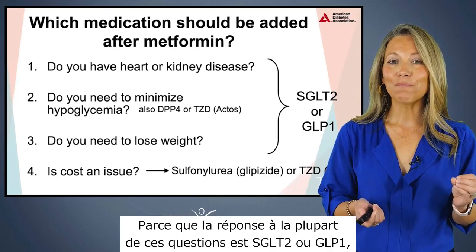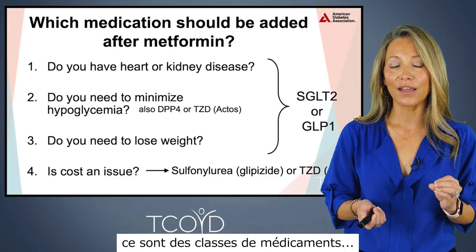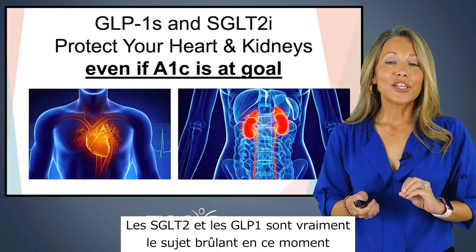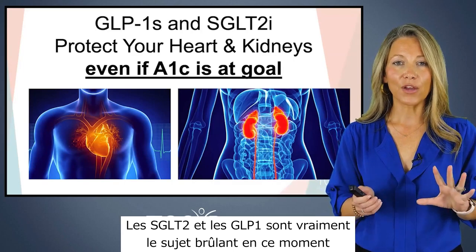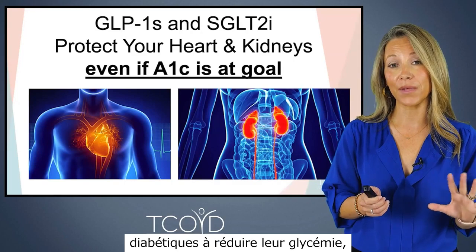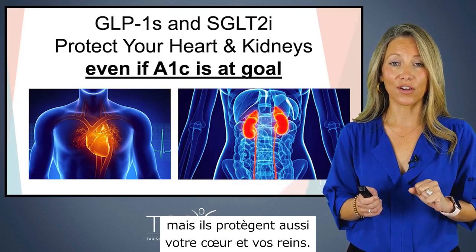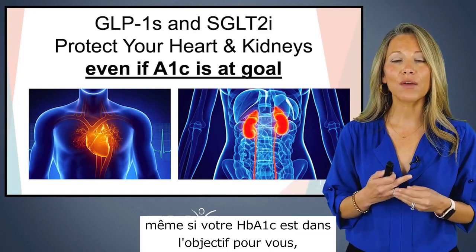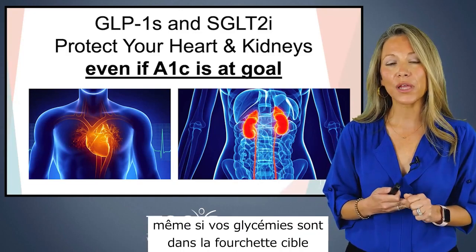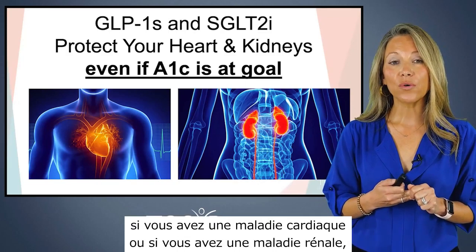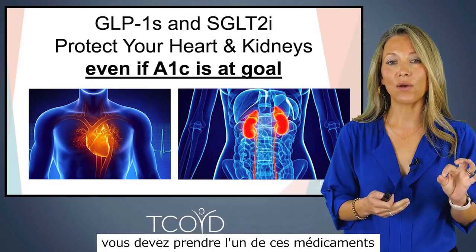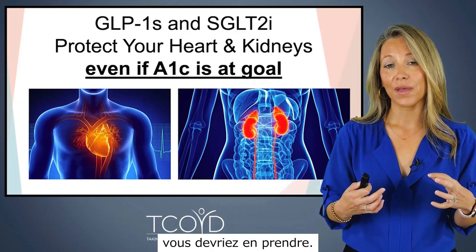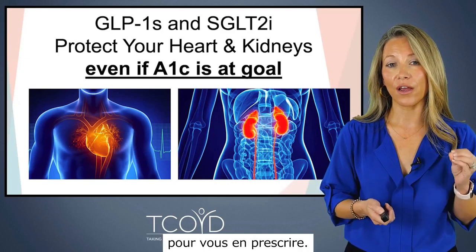Because the answer to most of these questions points to SGLT2 or GLP-1, I want to dive deeper into these classes of medications. SGLT2s and GLP-1s are really the hot topic right now because not only do they help people with diabetes lower blood sugar, but they also protect your heart and your kidneys. The new guidelines tell us that even if your A1C is at goal, if you have heart or kidney disease, you should be taking one of these medications. If you're not, think about talking to your healthcare provider about starting one.